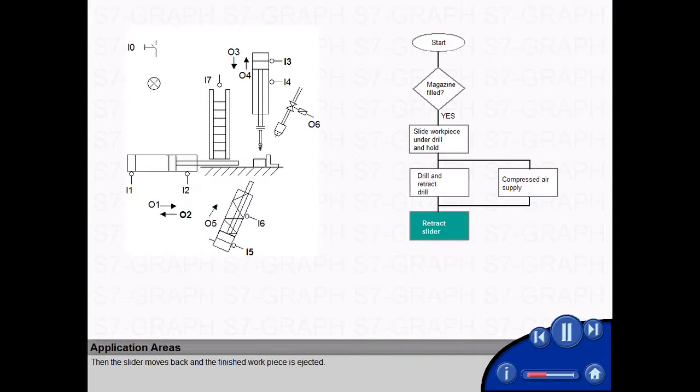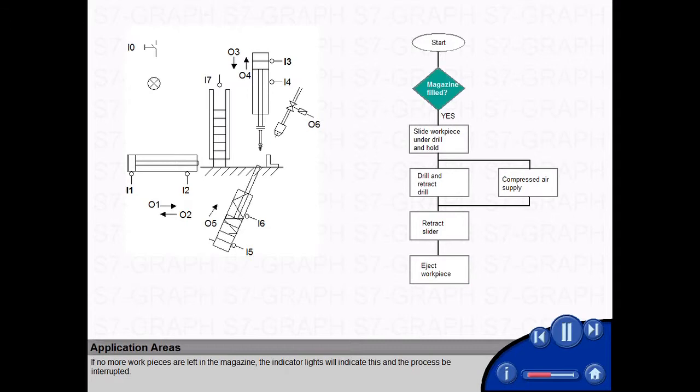Then the slider moves back and the finished workpiece is ejected. If no more workpieces are left in the magazine, the indicator lights will indicate this and the process be interrupted.